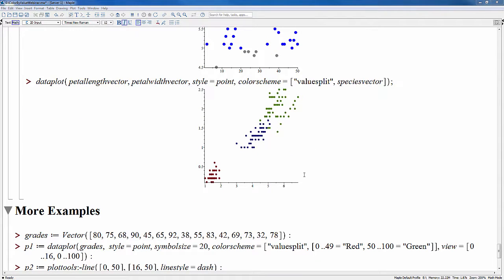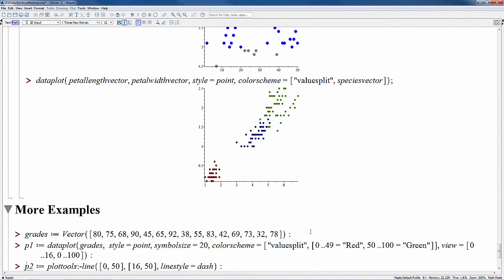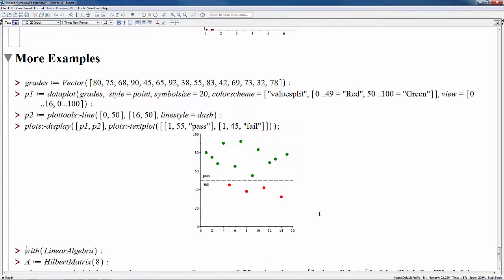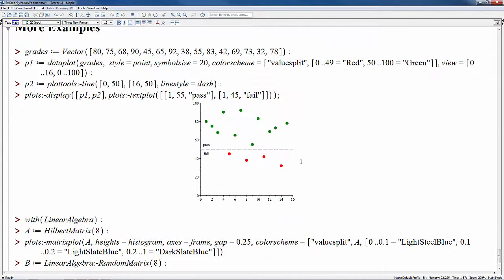We'll end by looking at two final examples. This first example here simply shows how easy and useful the value split color scheme can be for showing the separation of data values such as pass-fail grades, profits and losses and so on. So it's a very simple example, not too different from the ones I'd already shown you.